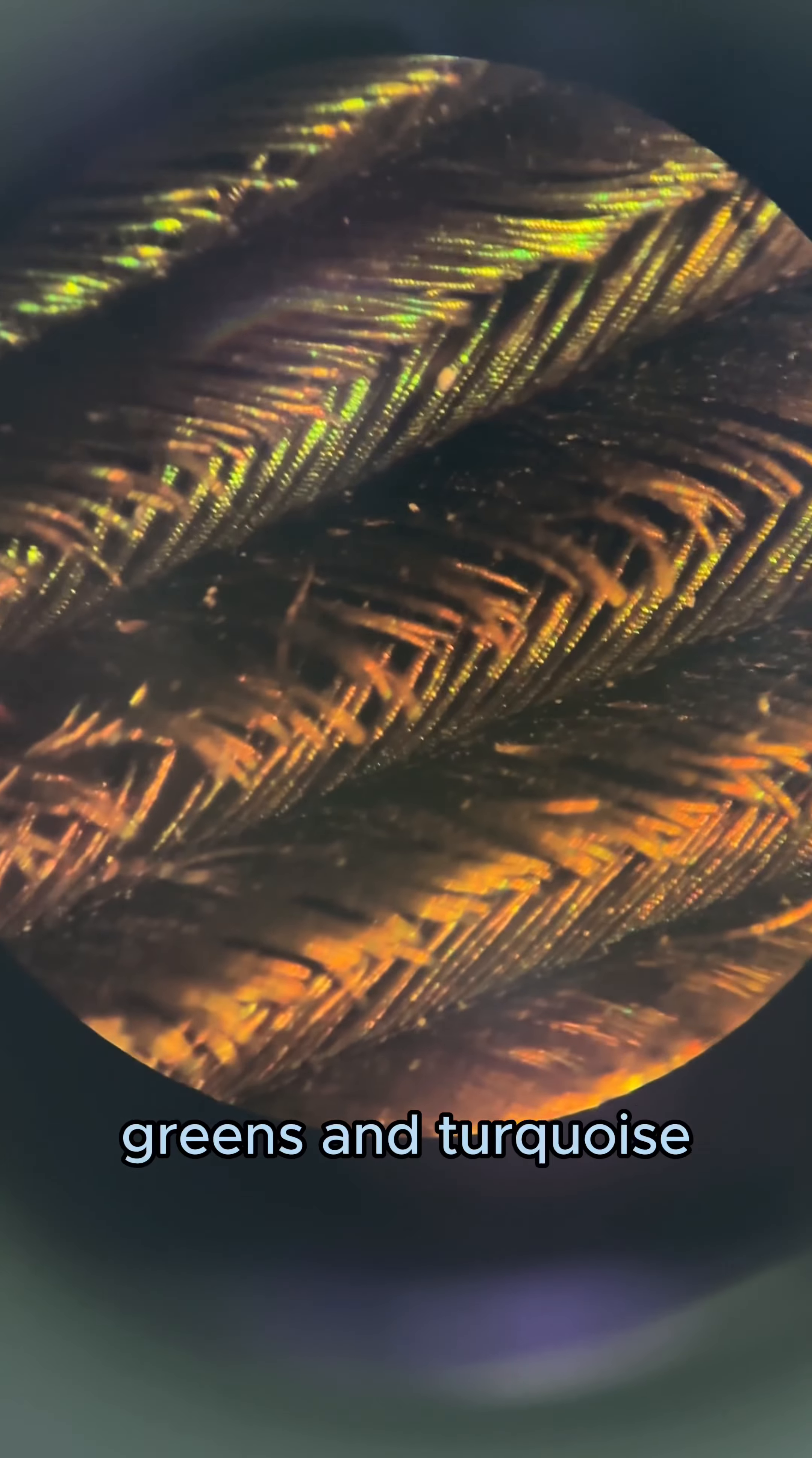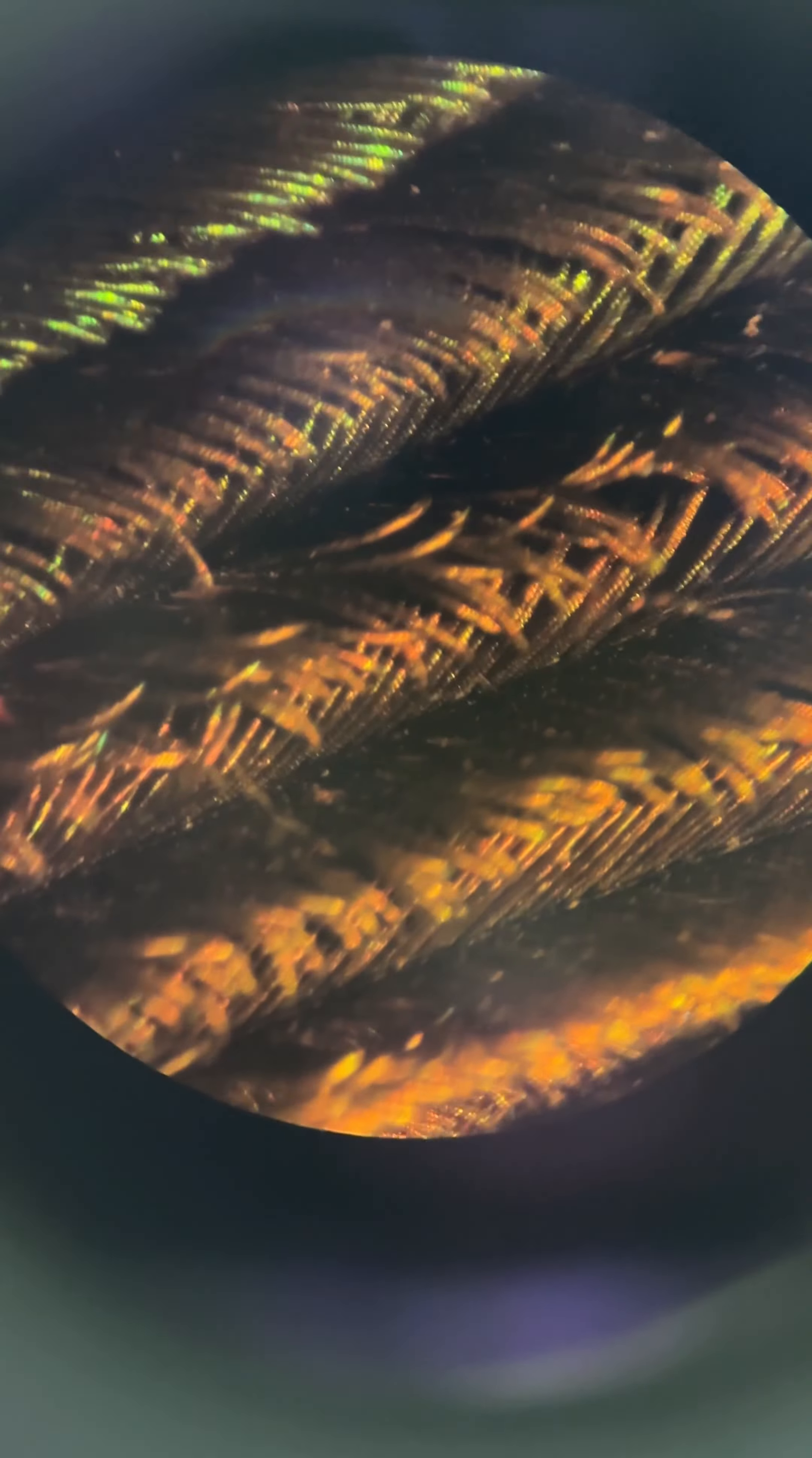Surfaces that are microscopically divided can reflect and disperse light, producing those rich blues, greens, and turquoise.